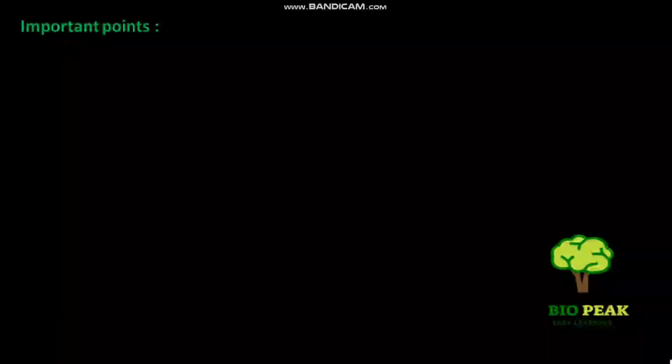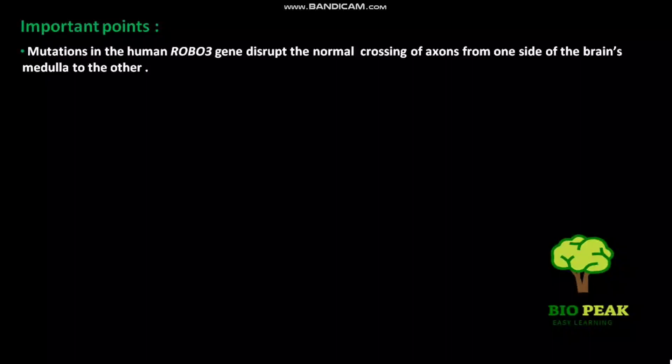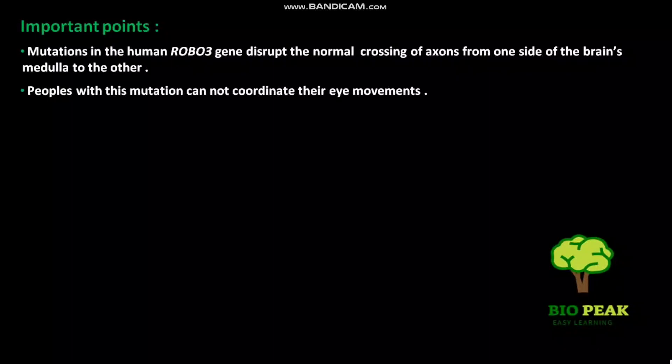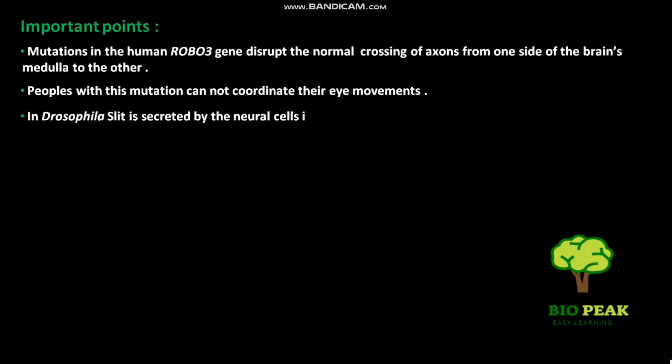Now, some important points. Mutations in the human ROBO3 gene disrupt the normal crossing of axons from one side of the brain's medulla to the other. People with this mutation cannot coordinate their eye movements. In Drosophila, Slit is secreted by the neural cells in the midline.